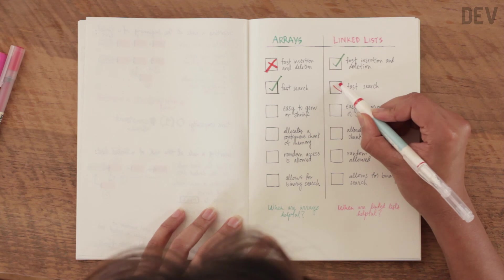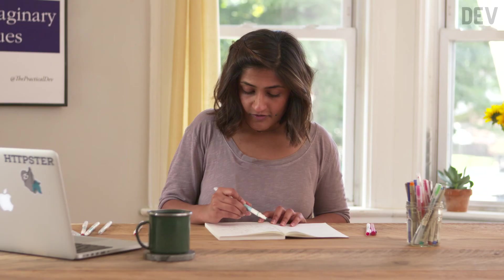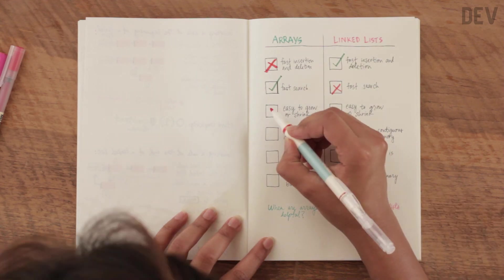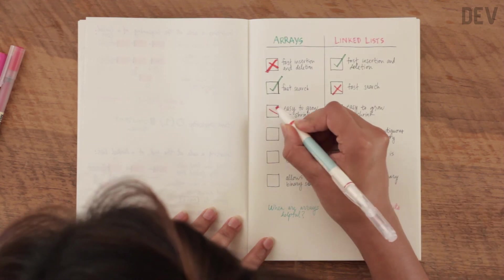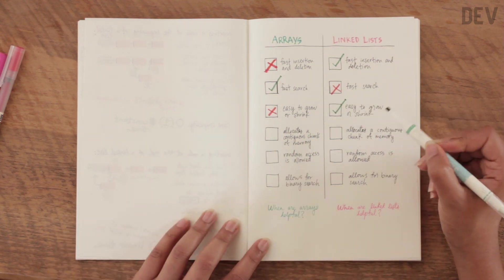Arrays, as we know, are static structures, which means that they are not easy to grow or shrink. Linked lists, on the other hand, are much easier to manipulate and grow or even shrink. They're dynamic structures. Since it's all just about rearranging some pointers, growing or shrinking our linked list by a lot isn't really something we need to worry about. Similarly, arrays will allocate a contiguous chunk of memory, whereas linked lists don't need to allocate all of its memory at once.